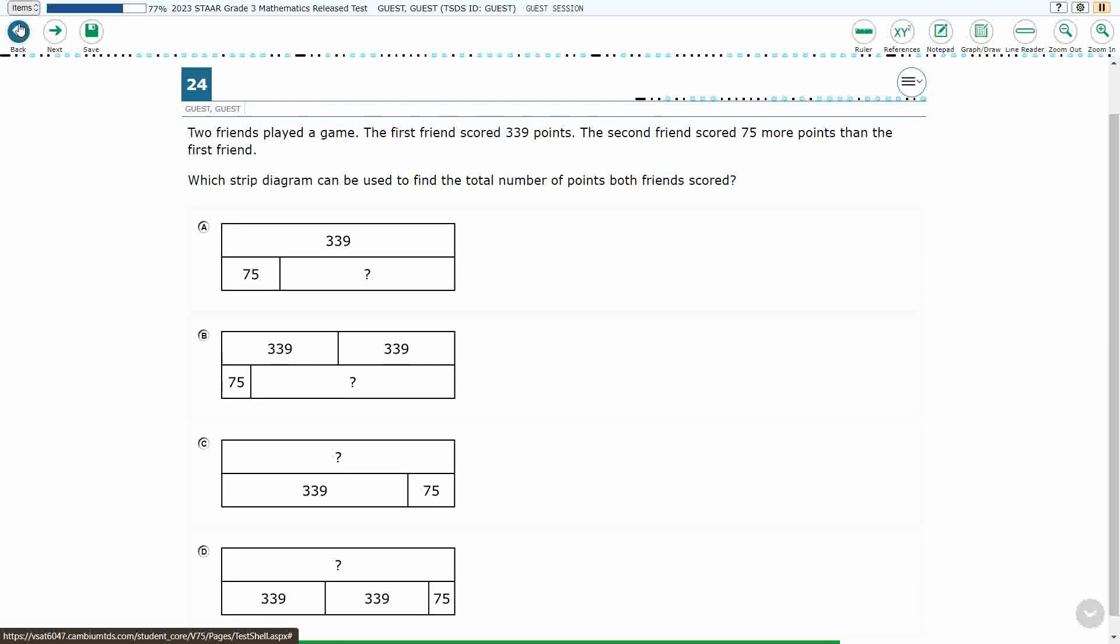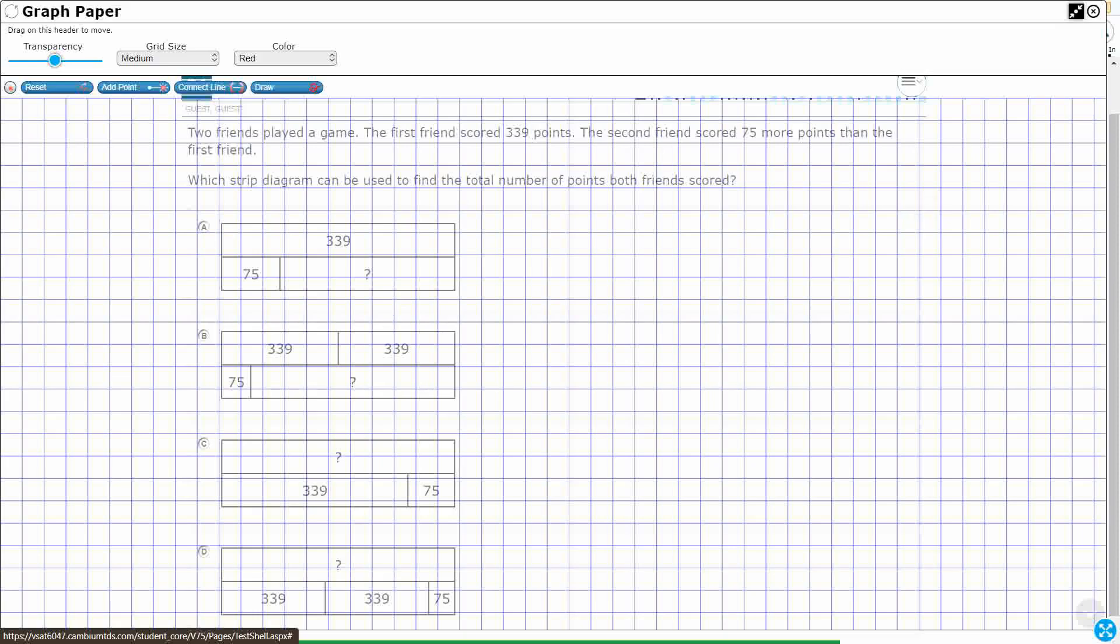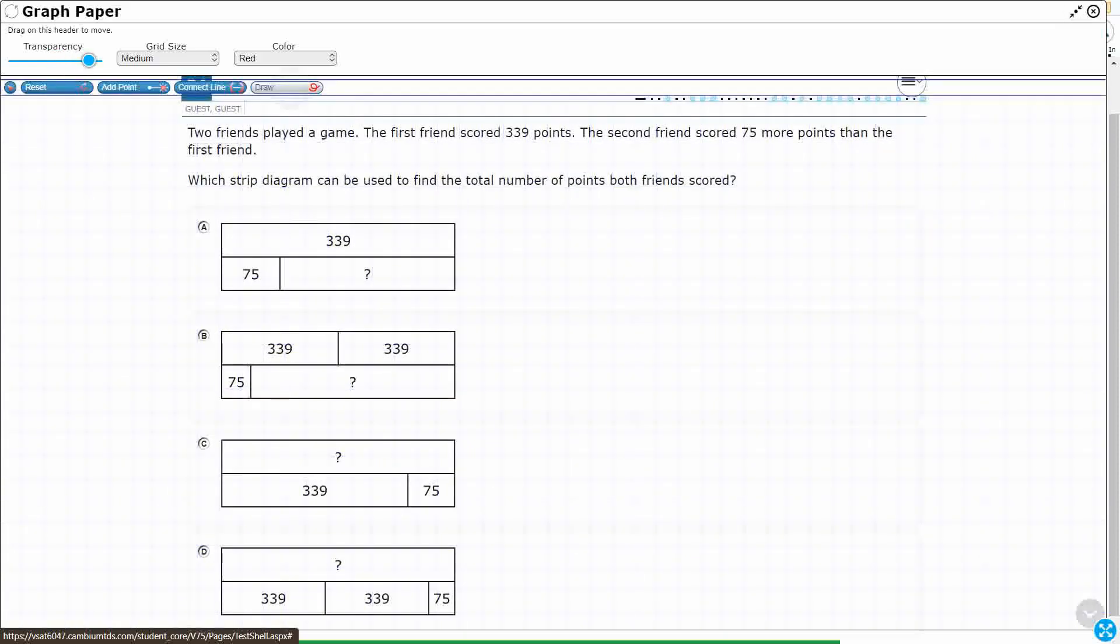All right, so the two friends are playing a game here, and we're trying to figure out how much a second friend scored. So let's look at our clues. Two friends played a game. The first friend scored 339 points, and the second friend was 75 more than that. Okay, so we need to find a strip diagram to represent this, but honestly, let's just try to figure out what it is.